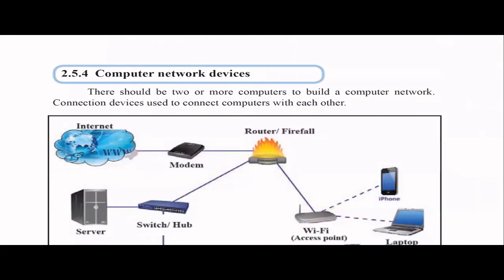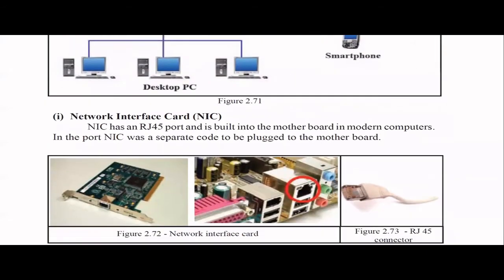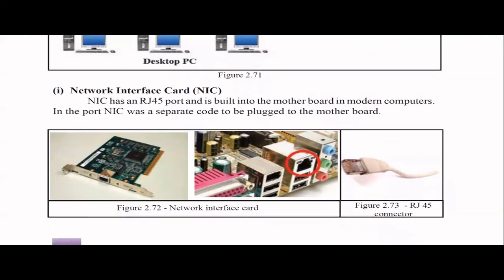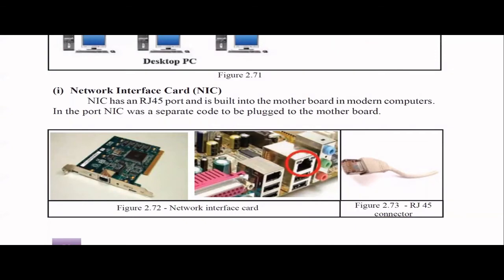Now we'll talk about computer network devices. A computer network is a collection of two or more computers, and we need connection devices to connect them. The first device is the NIC — Network Interface Card. Most modern computers have a built-in NIC, which includes an RJ45 port that is used to connect to the network.